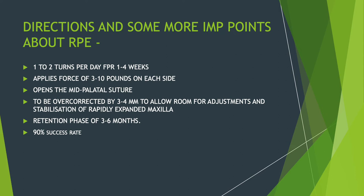These are rapid palatal expanders, unlike the slow ones seen before. The force applied here is much larger — almost three to ten pounds on each side. These rapid palatal expanders tend to open the mid-palatal suture. The palate consists of two palatal shelves joined in the center, forming a suture. This appliance actually opens that suture in the center, allowing the upper jaw to expand.